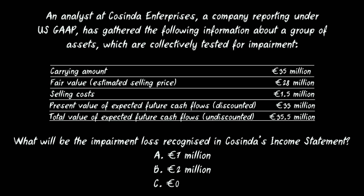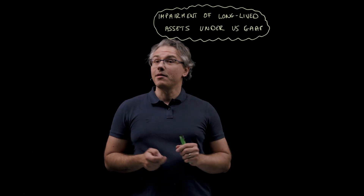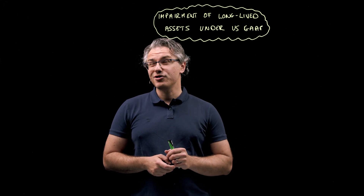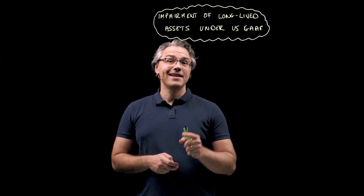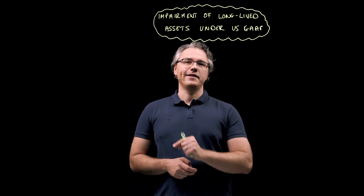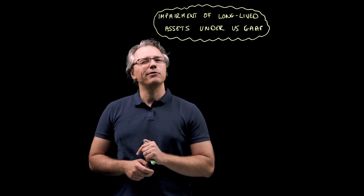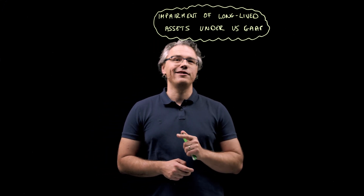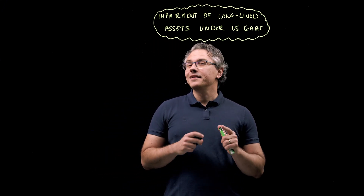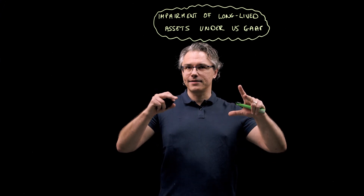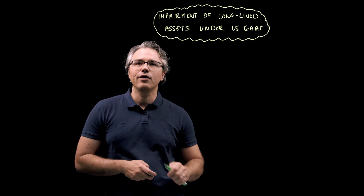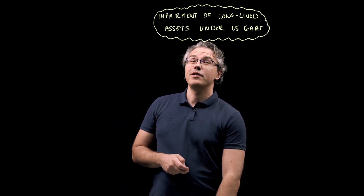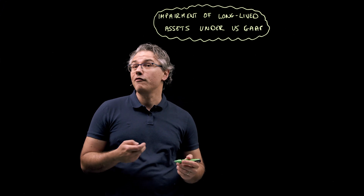The answer choices are 7 million, 2 million, or 0. I'm going to start by repeating something from the previous recording: testing an asset for impairment is all about figuring out whether its carrying amount is overstated — in other words, whether the value at which the asset is carried in the balance sheet is too high relative to the benefits that asset may still generate for the business.